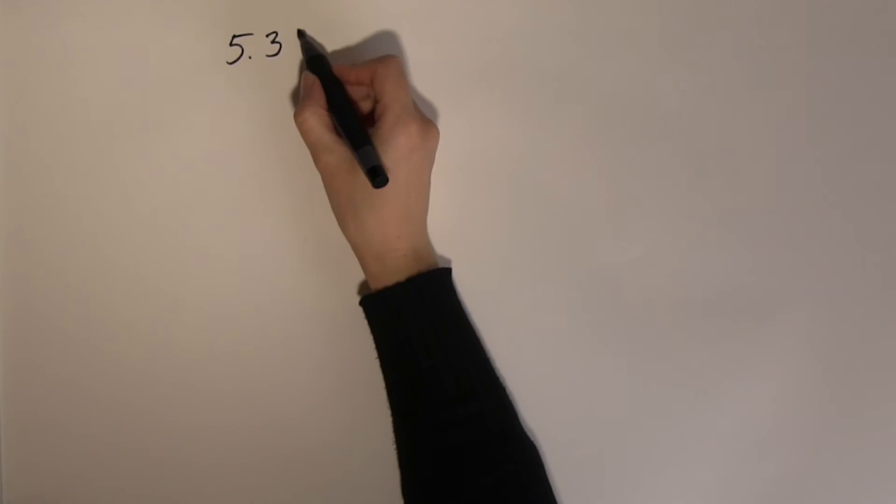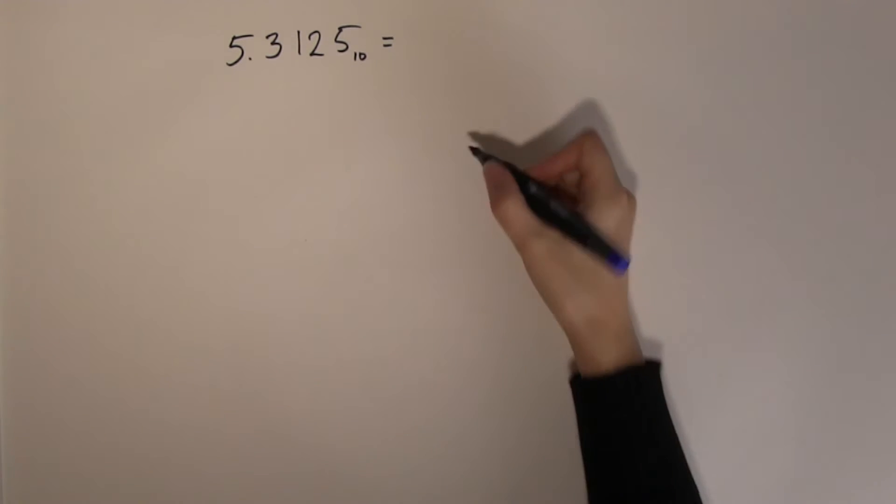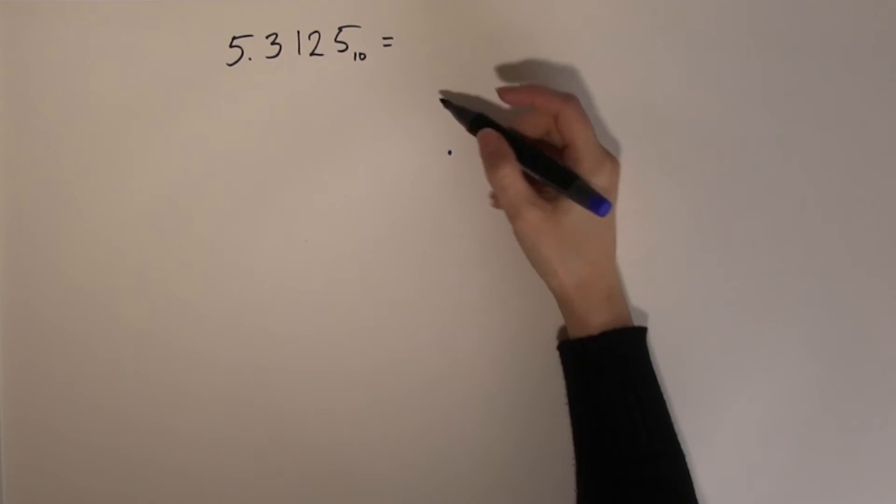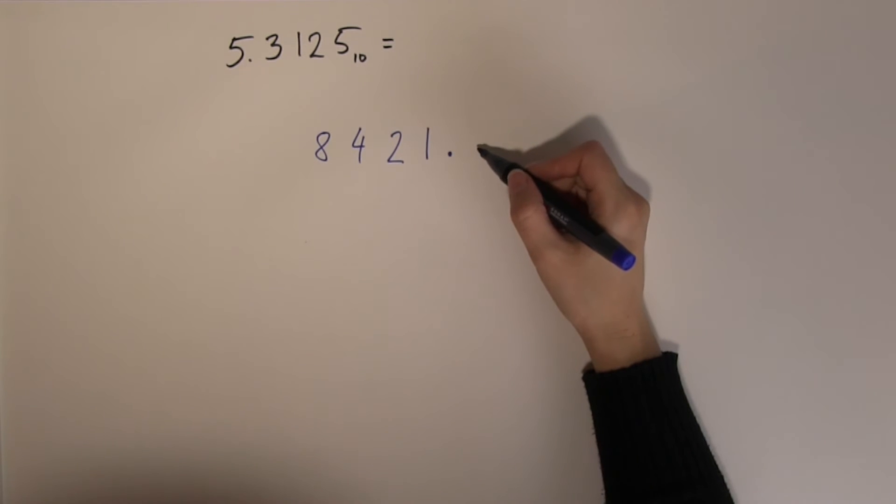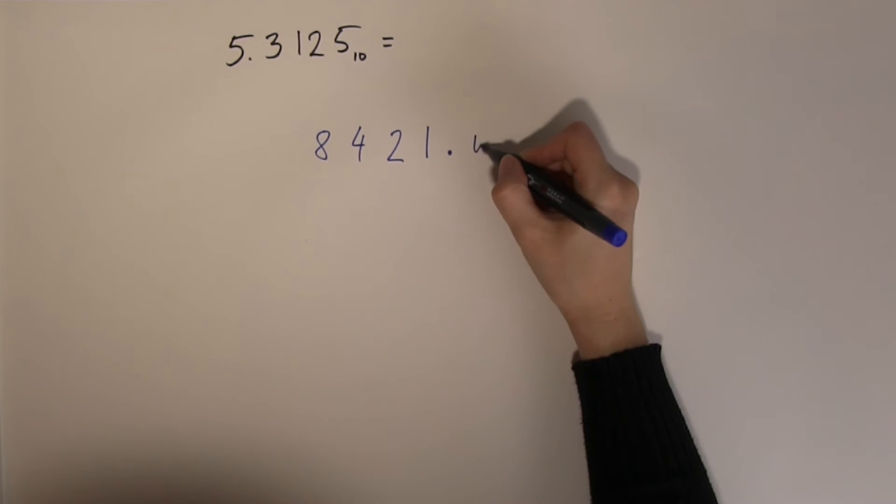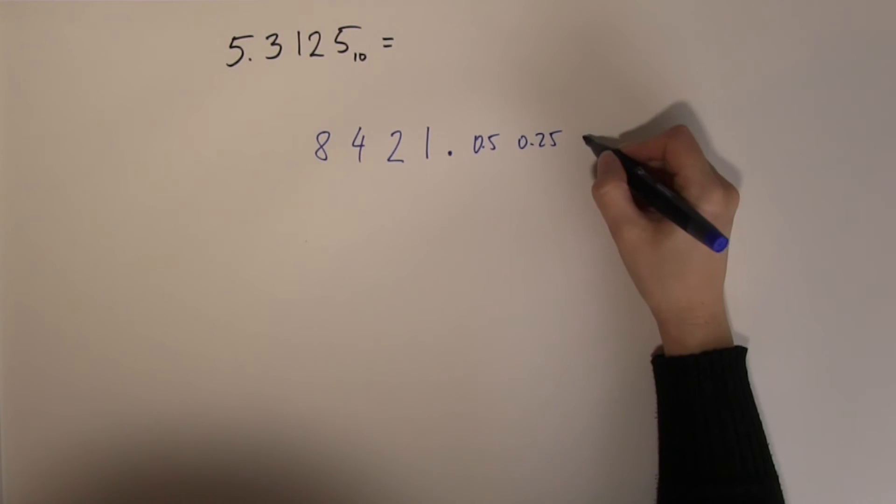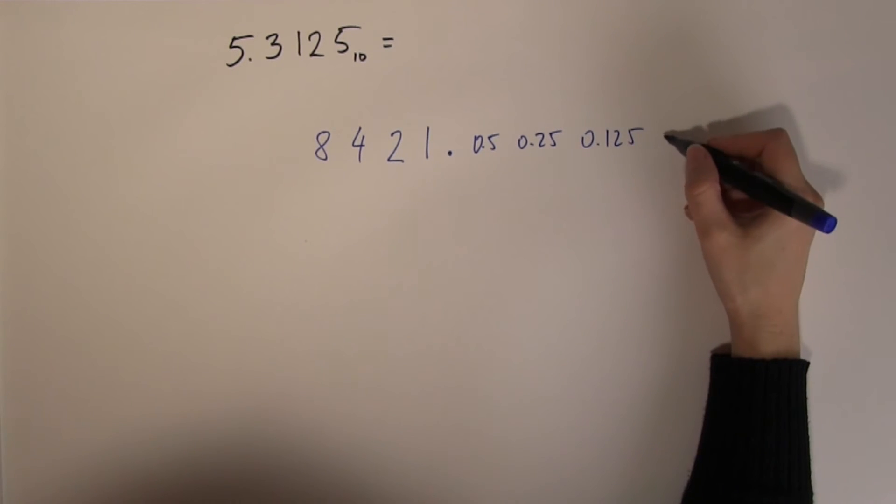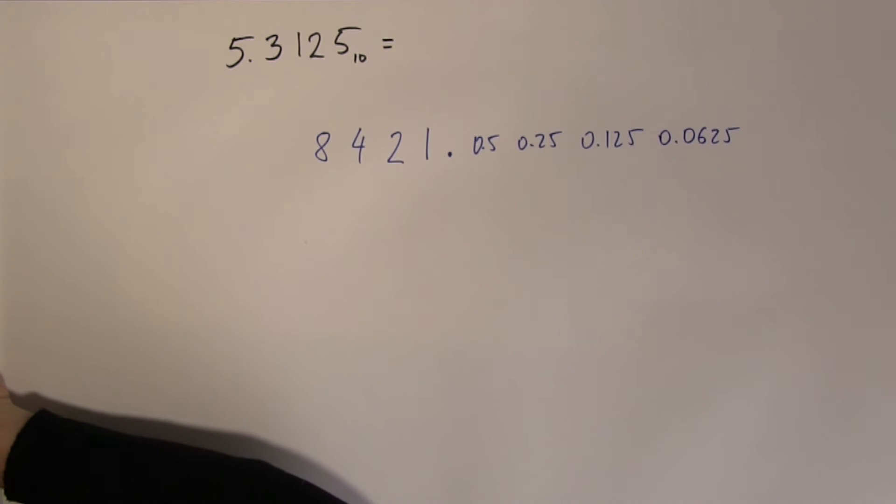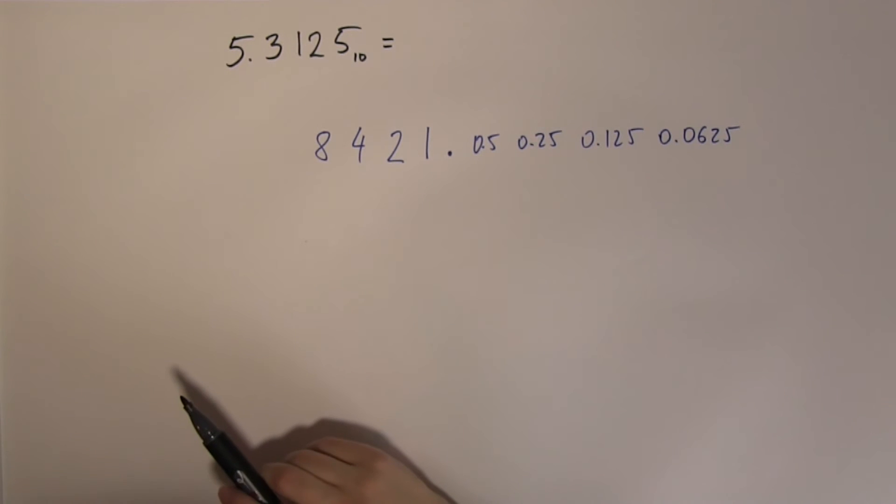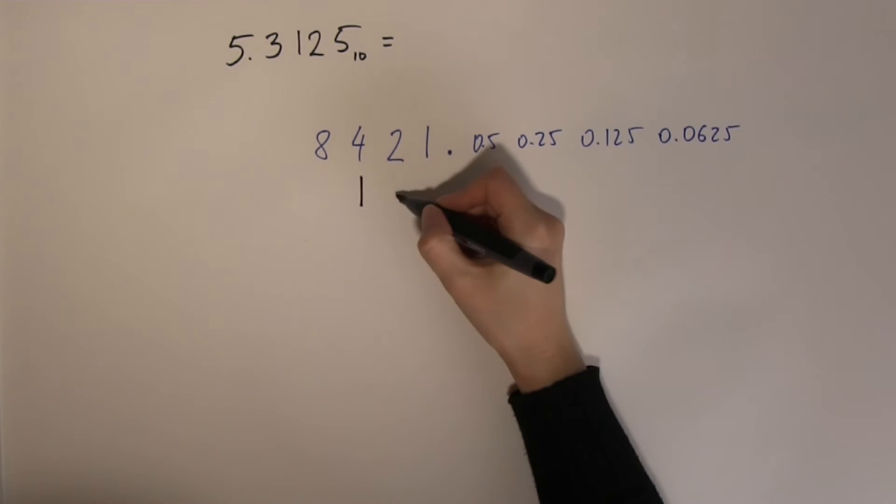Let's look at a somewhat more complicated example. So 5.3125 in decimal, what is it equal to in binary? Again, write down the place values. On the left-hand side of the radix point, everything is the same as it always has been. And on the right-hand side, I have 0.5, 0.25, 0.125, and then I have 0.0625.